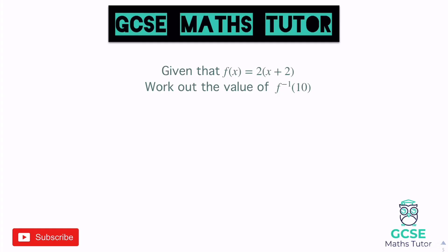This question says: given that f of x equals 2 brackets x plus 2, work out the value of f minus 1 of 10. So f minus 1 still means the inverse function, but with a 10 in there it wants us to substitute that number in once we have the inverse function. First things first, we can see this inverse f, so let's find an expression for the inverse of f. We've got some brackets there, so let's expand them straight away when we write y equals: y equals 2 times x, which is 2x, and 2 times 2 is 4, so plus 4.